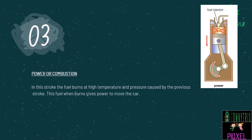The next stroke is the power or combustion stroke. In this stroke, the fuel burns at high temperature and pressure caused by the previous stroke. This fuel, when it burns, gives power to move the car. The fuel which was compressed at such a high temperature causes pressure, and due to this pressure the fuel starts burning at a very high temperature. This results in the car moving, and that is why an engine is called a machine which converts power into motion.